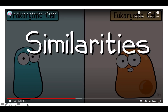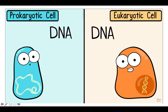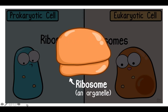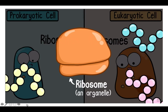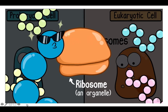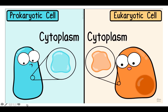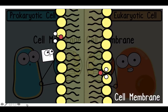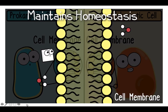Prokaryotic cells and eukaryotic cells do have a lot in common. Both have DNA, which is critical because DNA is the cell's genetic material. Both prokaryotic cells and eukaryotic cells have ribosomes, which are small organelles — an organelle being like a tiny organ. The ribosomes have the important job of making proteins. Both cells have cytoplasm, the jelly fluid within cells. Both of them have a cell membrane, also known as a plasma membrane, which controls what goes in and out of the cell, maintaining homeostasis. All cells have a cell membrane.